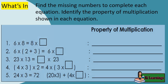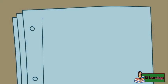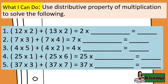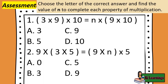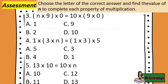Find the missing numbers to complete each equation and identify the property of multiplication shown. Use the distributive property of multiplication to solve the following. Choose the letter of the correct answer and find the value of n to complete each property of multiplication.